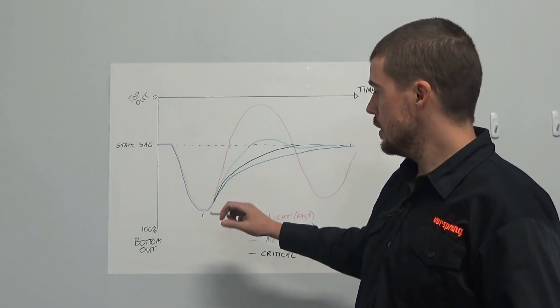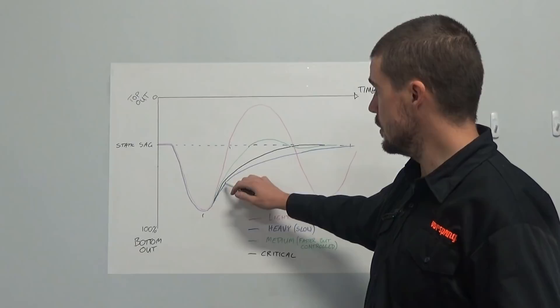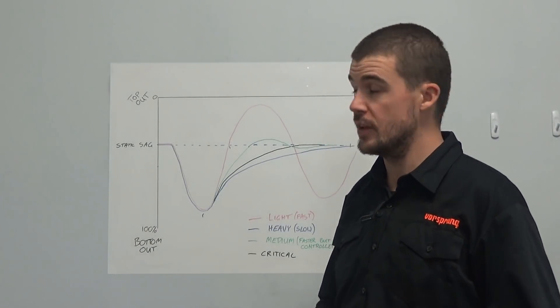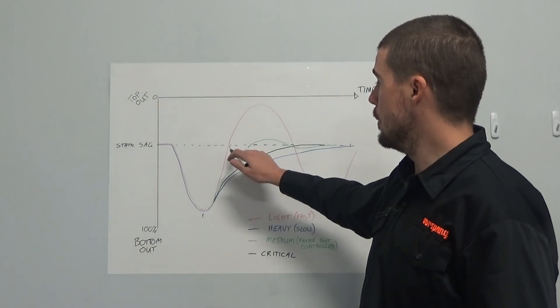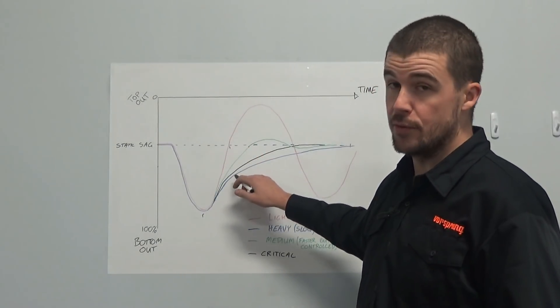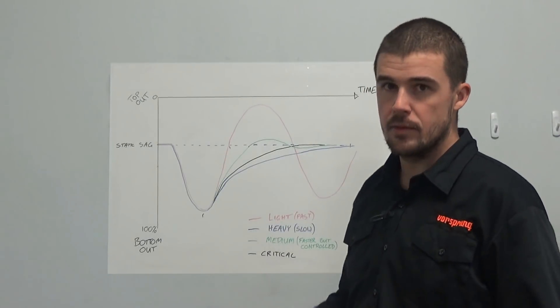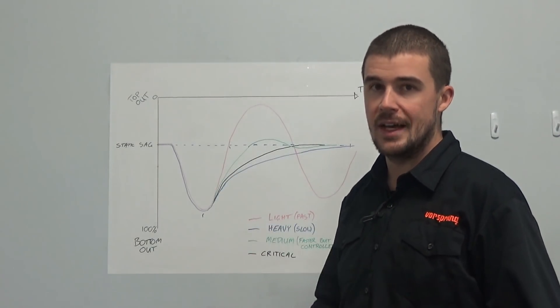As a result, any other bumps that are encountered before the suspension is back at that dynamic ride height or the static sag point, you are already further into your travel to start with. And if that happens again and again, the result is predictable. It packs down into its suspension.